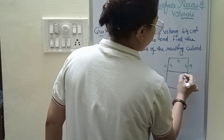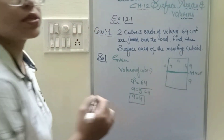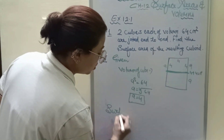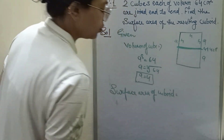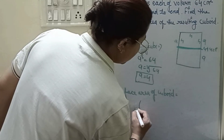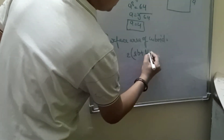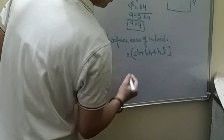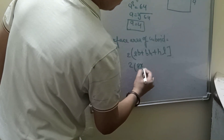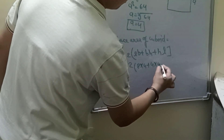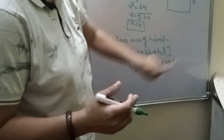When joined end to end, the length becomes 4 + 4 = 8 cm and the remaining dimensions are 4 cm each. Now we find the surface area of the cuboid using the formula: 2(lb + bh + lh). So 2 × (8×4 + 4×4 + 4×8).